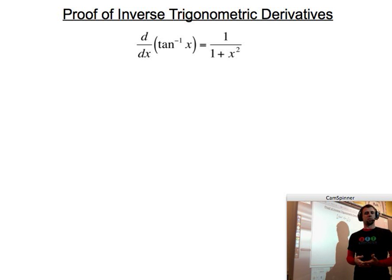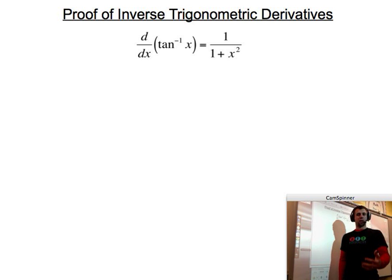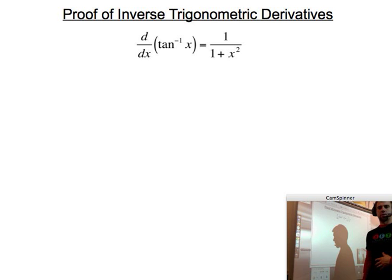If you looked at the recent video, inverse sine of x, this is very similar in nature. This one is actually a little bit more simple, so we will be looking through this very quickly to try to figure out one way to show the proof that the derivative inverse tangent is 1 over 1 plus x squared.